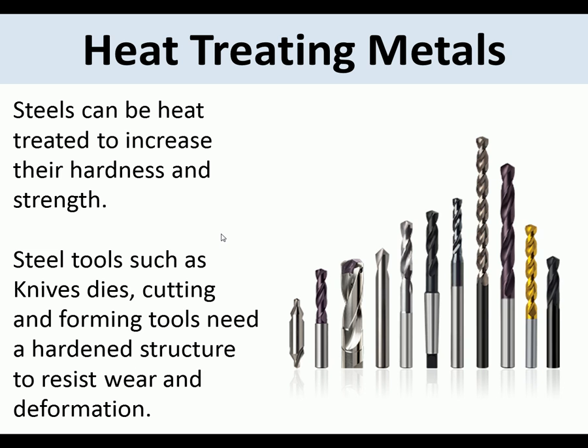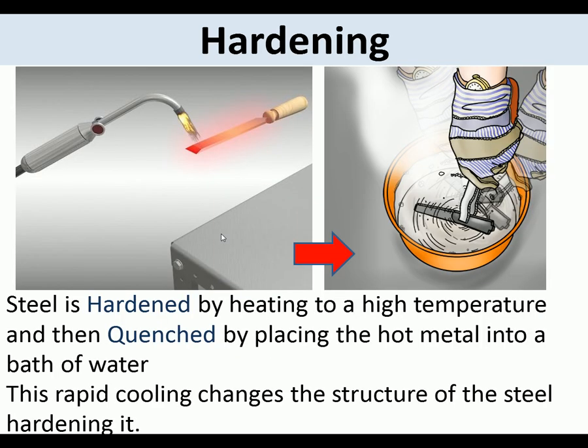Heat treating metals: steels can be heat treated to increase their hardness and strength. Steel tools such as knives, dies, and cutting and forming tools need a hardened structure to resist wear. Steel is hardened by heating it to a high temperature and then quenched by placing the hot metal into a bath of water. This rapid cooling changes the structure of the steel, hardening it, but it also makes it brittle.